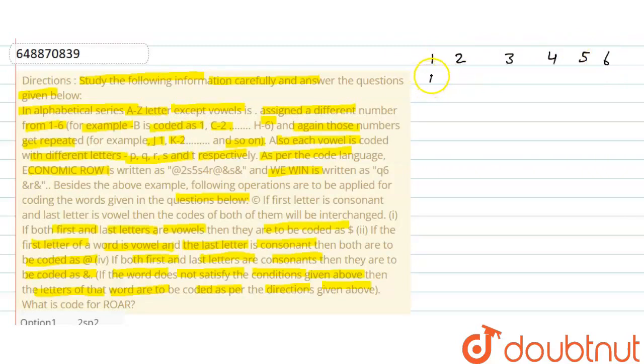We have to assign the vowels. A is a vowel. Then B is consonant coded as 1. Next is C consonant coded as 2. Then D, E is vowel. Next is F, G, H, I is vowel. Then J, K, L, M, N. O is vowel, that means there will be P.